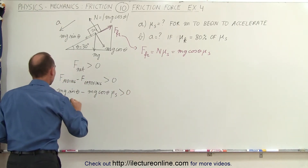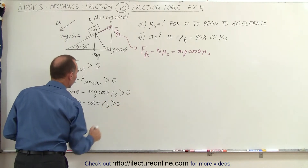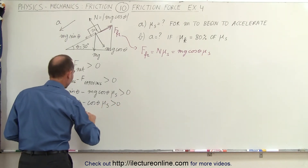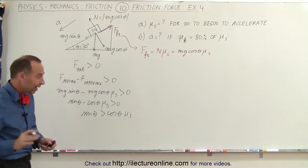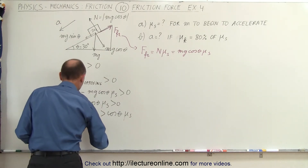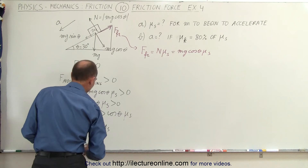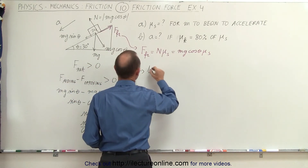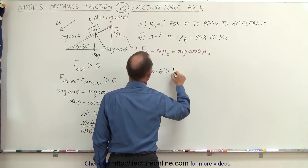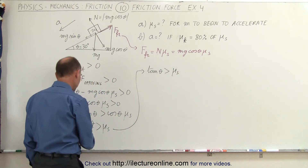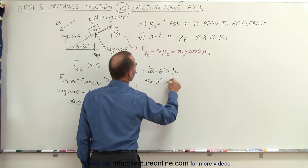We can divide both sides by mg, which means that sine of theta minus cosine of theta times mu sub s must be greater than zero. Moving the friction term to the other side, sine of theta must be greater than cosine of theta times mu sub s. Dividing both sides by cosine of theta, sine of theta divided by cosine of theta must be greater than mu sub s, which means the tangent of theta must be greater than mu sub s. We can now plug in the value for theta, which is 30 degrees — we want the tangent of 30 degrees to be greater than mu sub s.